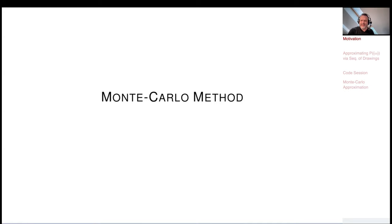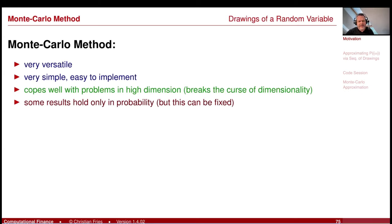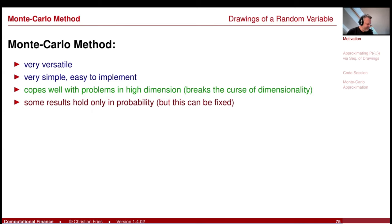I will start very easily. Monte Carlo is very versatile, very simple, and very easy to implement — this is also a big advantage. You can do parallelization on GPUs very easily. It copes well with problems in high dimension, breaking the curse of dimensionality. Some results only hold in probability, but this can be fixed.